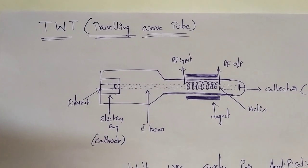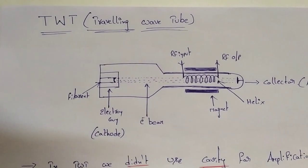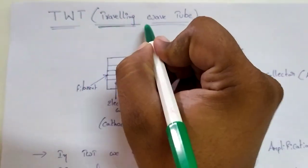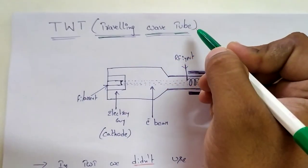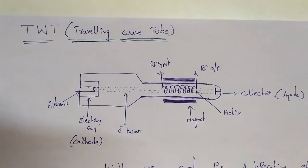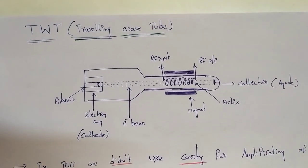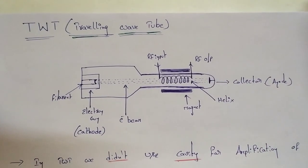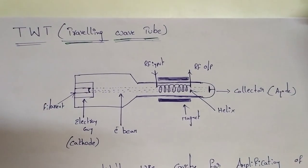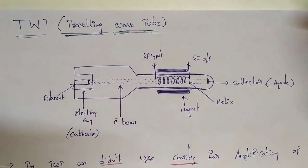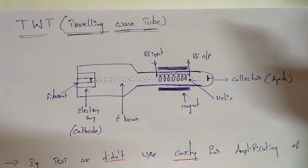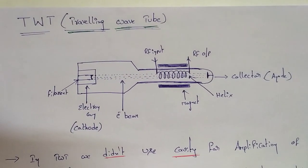I am going to talk about TWT. TWT is Traveling Wave Tube. We are doing amplification with this traveling wave tube. When it comes to Reflex Klystron, it is called Reflex Klystron.